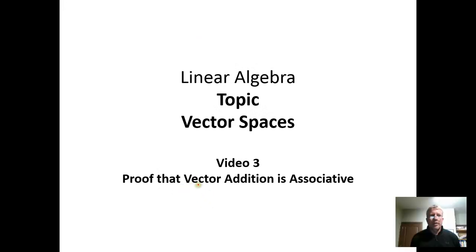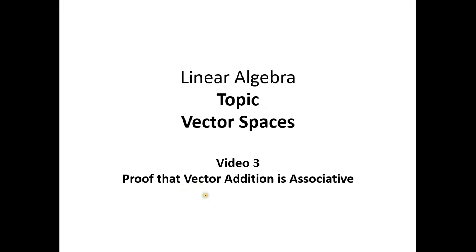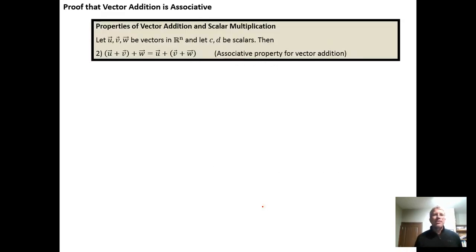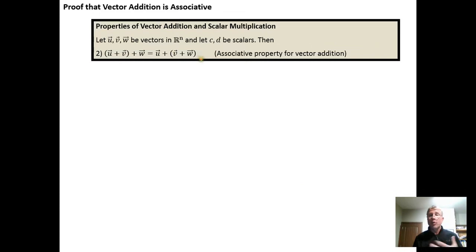In this video, we're going to go over a proof of the associative property of vector addition. Remember from the previous video, the claim was that vector addition is associative — that we can group the vectors however we want and get the same result.